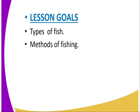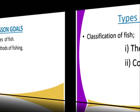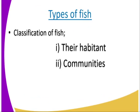Let us look at the lesson goals for today. We are going to look at the types of fish and the methods of fishing. There are a number of types of fish, but there are two ways in which we can classify them: either using their habitat — the place where they live — or using their community, meaning whether they live in communities.